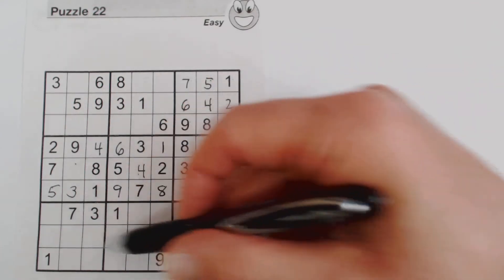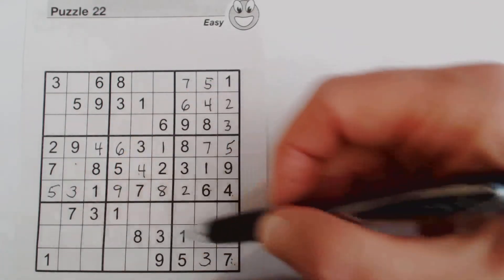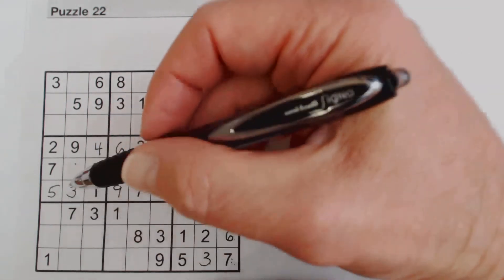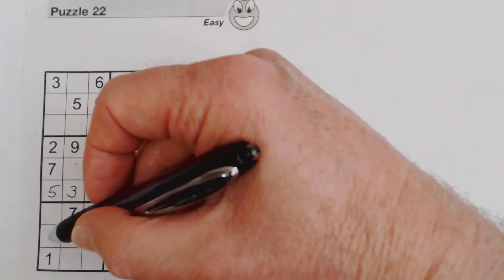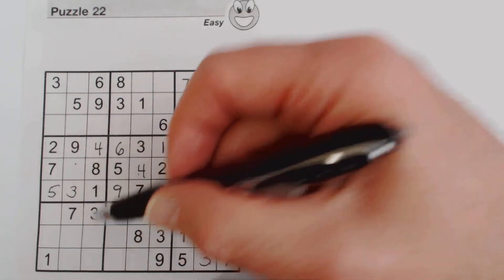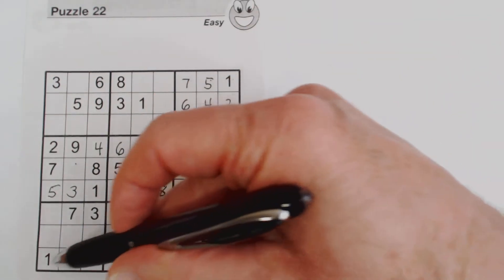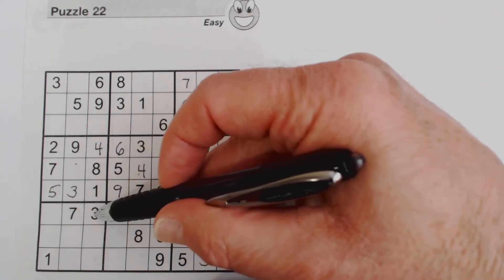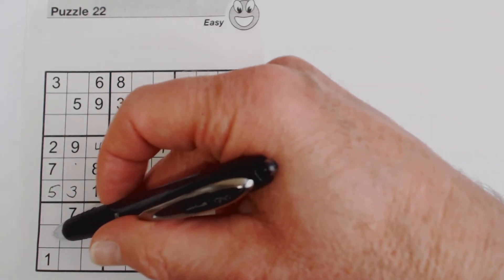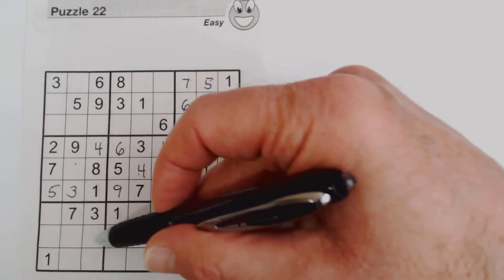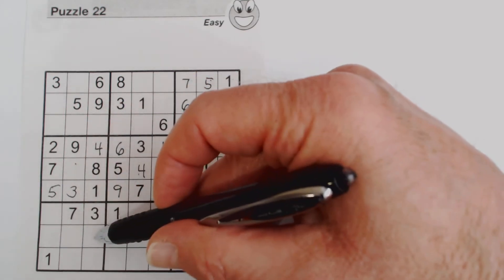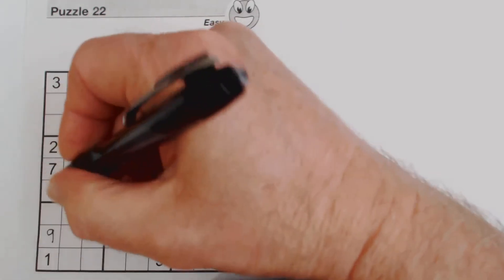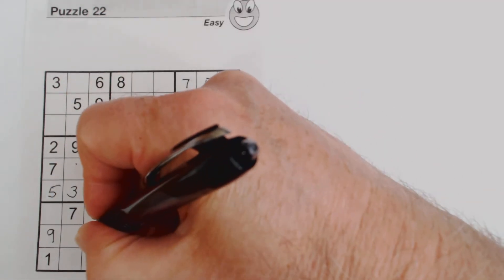Looking at these three cells: we've got 1, 9, 5, 3, 7 — there's already a 3 and a 7, but no 9 or 5. So one of these is a 9 and one is a 5. Checking the columns, we see a 9 confirmed for one cell and a 5 confirmed for another.